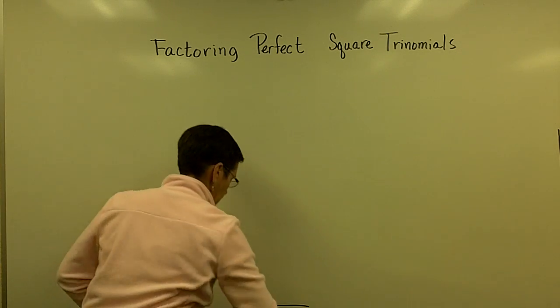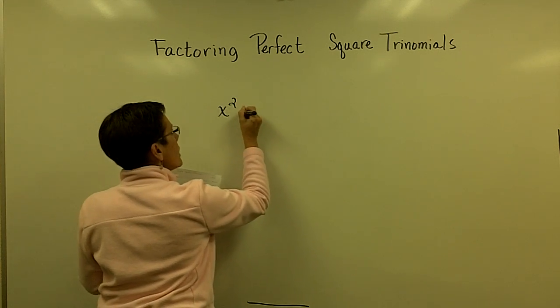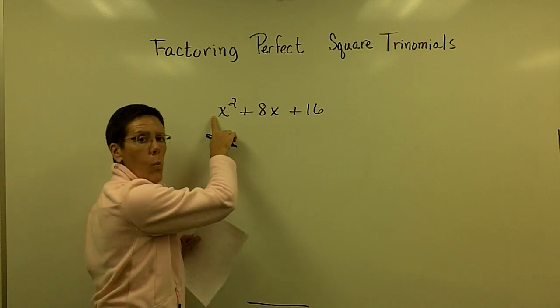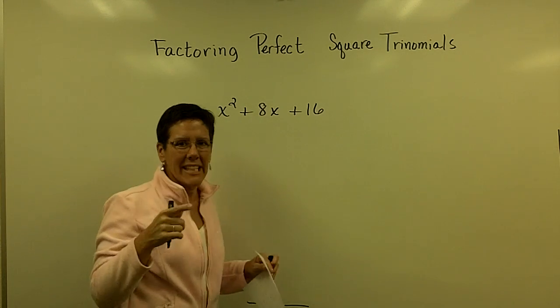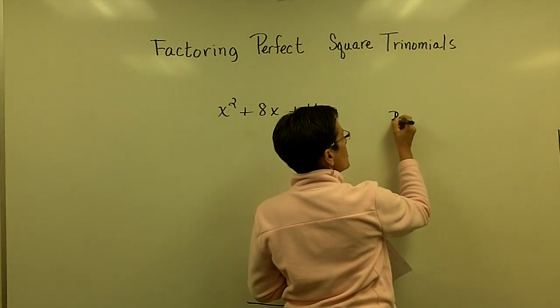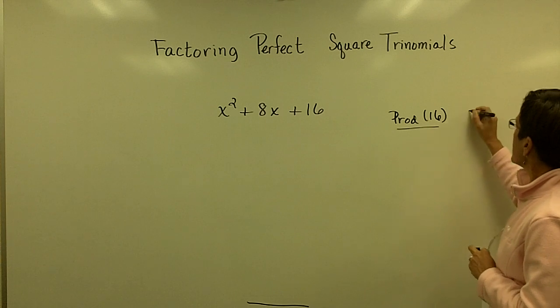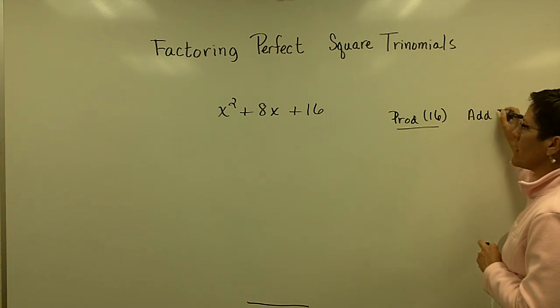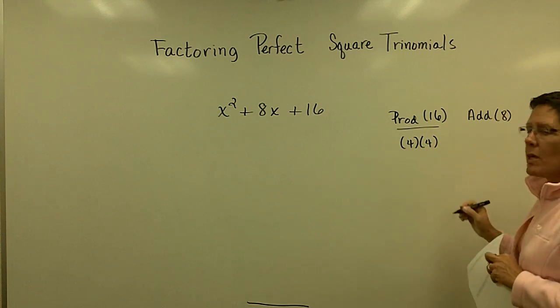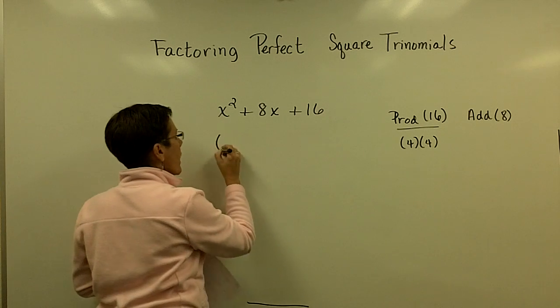For example, the trinomial x squared plus 8x plus 16 has a 1 in front of the x squared term. That's the easy trinomial to factor, because all we have to look for is two numbers whose product is the positive 16, and they need to add to be the 8. That's a pretty quick find. That's 4 and 4. Those two numbers multiply to be 16, and they add to be 8. So when we factor that,